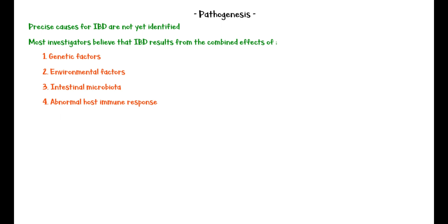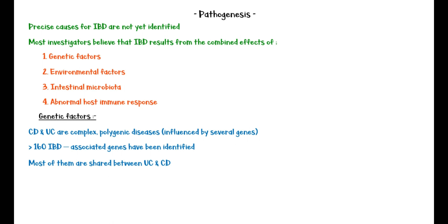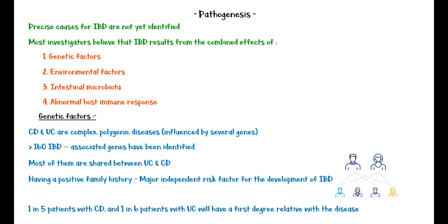Considering genetic factors, both Crohn's disease and ulcerative colitis are complex polygenic disorders, meaning they are influenced by several genes. More than 160 IBD-associated genes have been identified, and most of them are shared between ulcerative colitis and Crohn's disease. Having a positive family history is the major independent risk factor: 1 in 5 patients with Crohn's disease and 1 in 6 patients with ulcerative colitis will have a first degree relative with the disease.